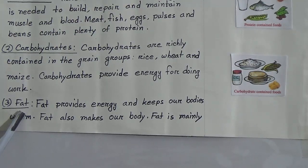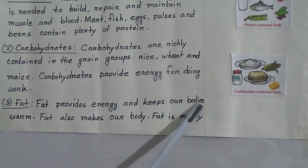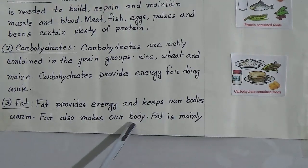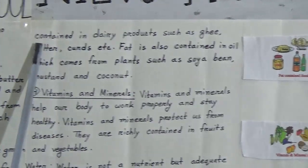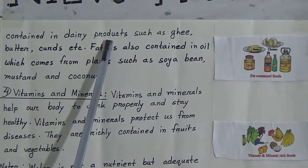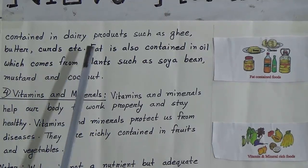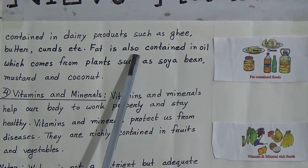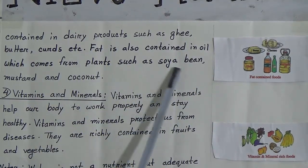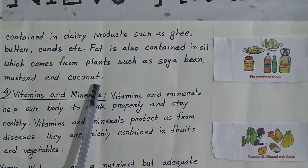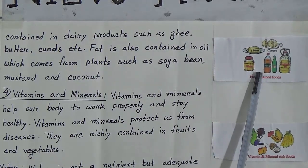Number three is fat. Fat provides energy and keeps our bodies warm. Fat also makes our body insulated. Fat is mainly contained in dairy products such as ghee, butter, curds, etc. Fat is also contained in vegetable oil which comes from plants such as soybean, mustard, and coconut. You can see in the picture — butter, ghee, coconut oil, soybean oil — these are all fat-containing foods.